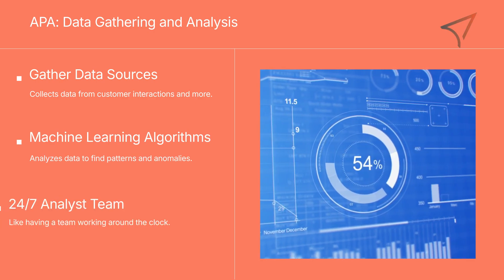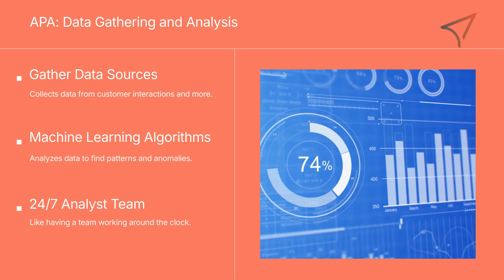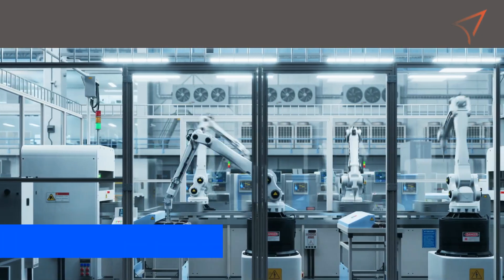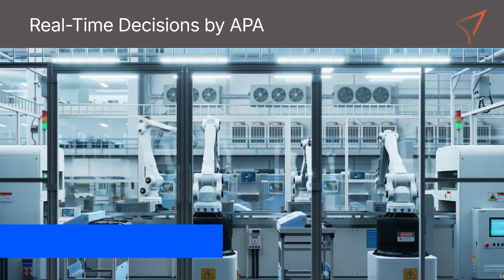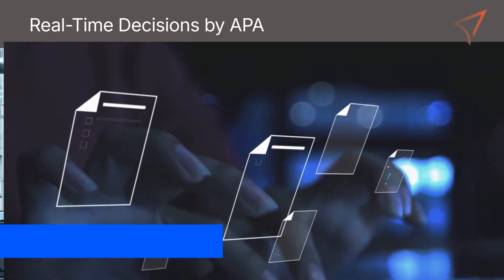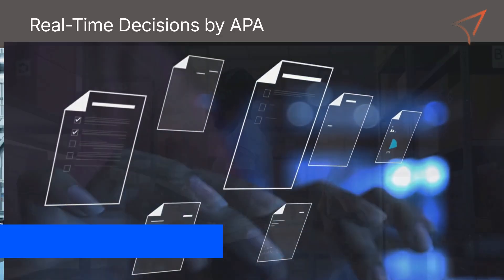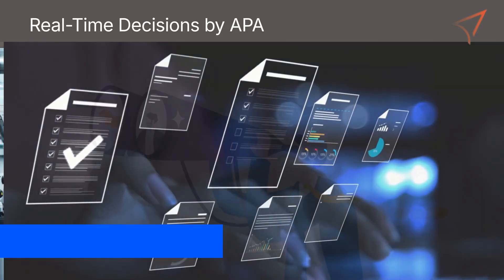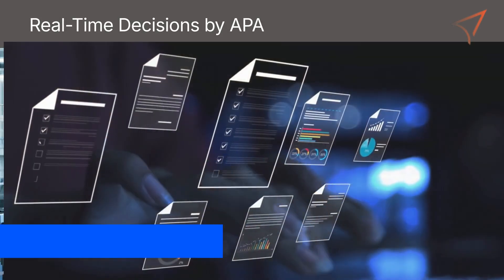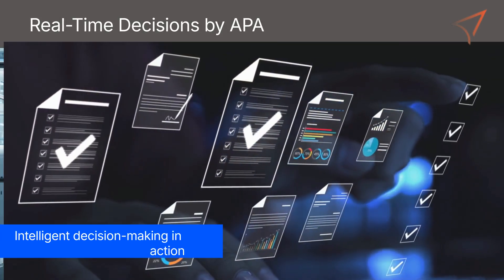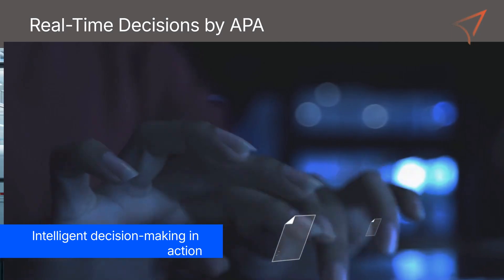In essence, it's like having a team of analysts working around the clock. Next, armed with these insights, APA makes decisions in real time. Imagine an automated system that adjusts inventory levels based on current sales data, or reroutes customer service inquiries to the appropriate department without human intervention. That's intelligent decision making in action.